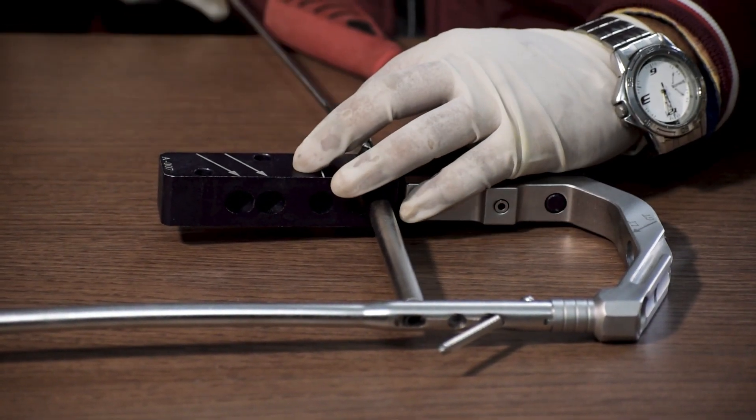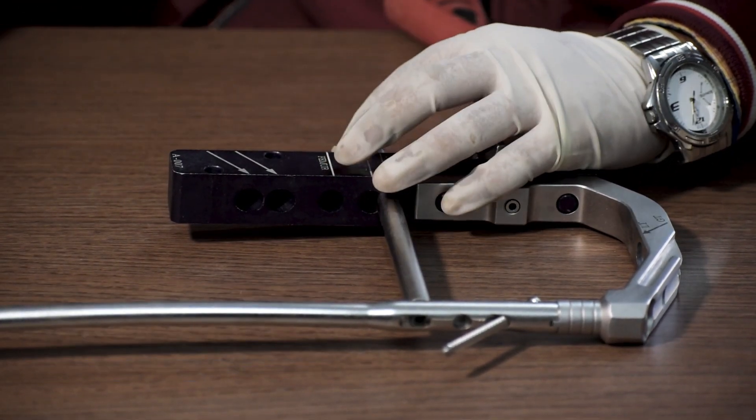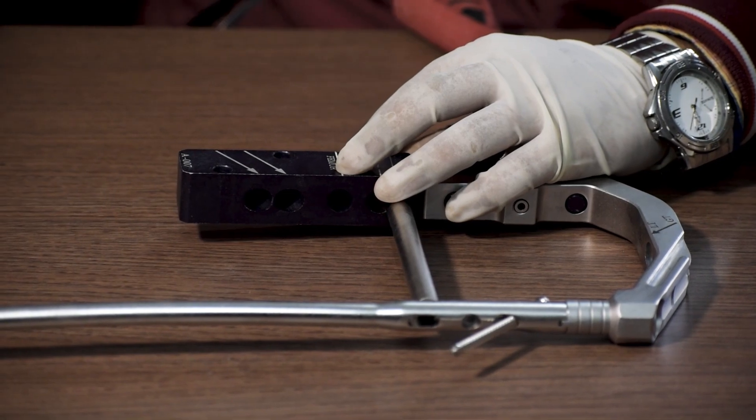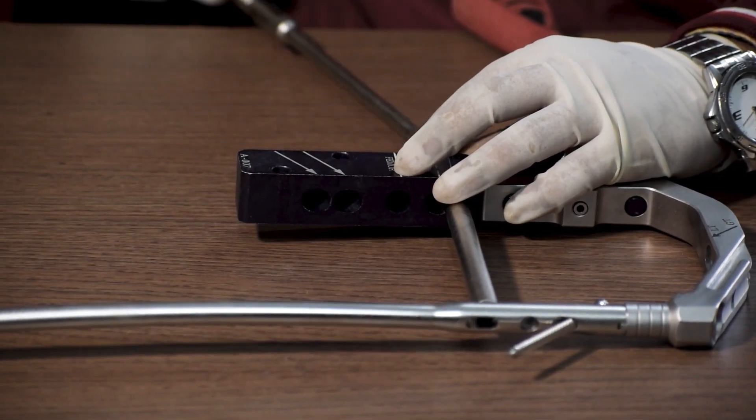And then drill with a 4mm drill bit. After the drilling, we remove the drill sleeve and the drill bit. Take the measurement with the help of a depth gauge.